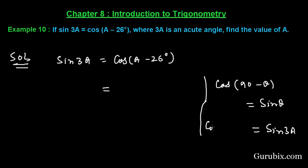Therefore, sine 3A can be written as cos(90° - 3A). So here we can write cos(90° - 3A) and here we have cos(A - 26°).